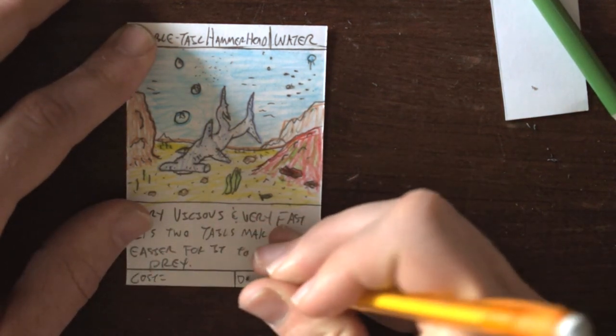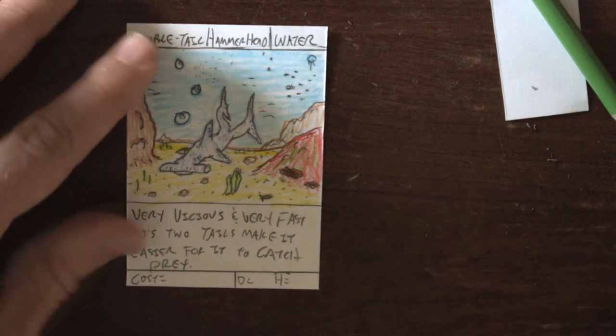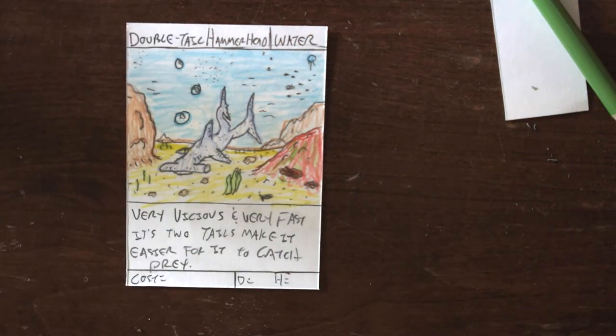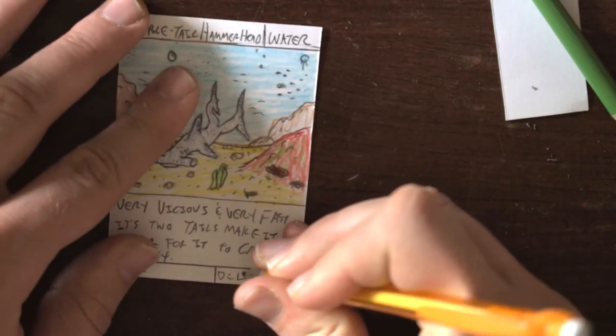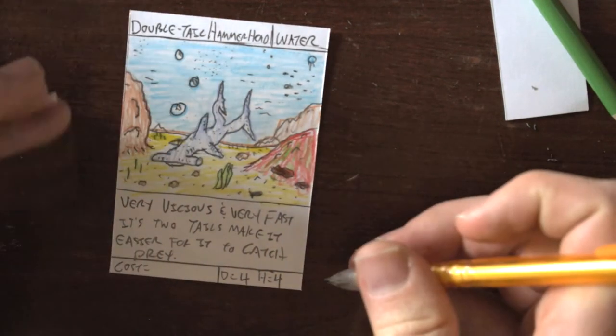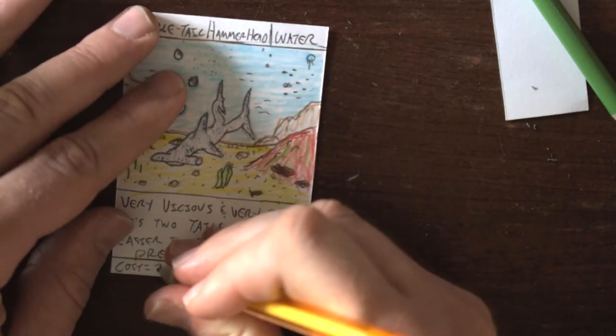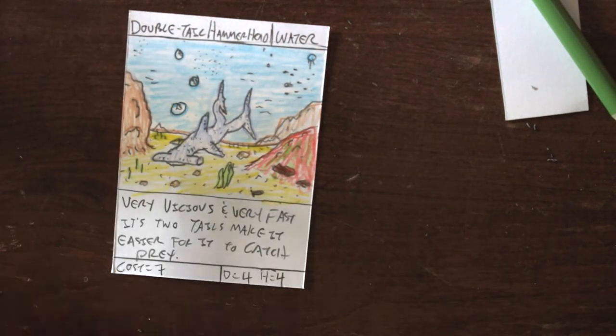Cost, damage, and health. Well, it's pretty vicious shark. I'm kind of feeling like he's a 4-4. Damage 4, health 4. Plus 4 is 8, minus 1 is 7. So his cost is 7.